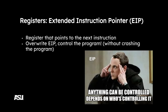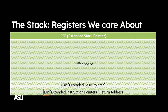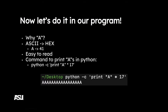The EIP is the register we care about because it is the register that points to the next instruction. If you can control the EIP then you basically get to control the program. What a buffer overflow does: we write a bunch of gibberish — in this case capital A's — to fill the buffer space, overwrite the base pointer, and then overwrite the EIP. Once you overwrite the EIP, you get to control the program. Capital A is easy to read because in ASCII it's represented as hex 0x41. We use 'python -c "print("A" * 17)"' to print a specific number of A's.